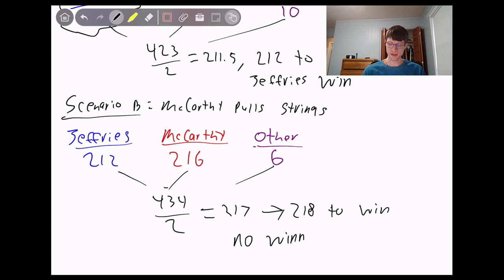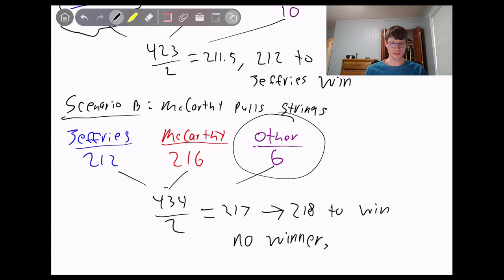So we would have no winner. So basically there's no good path for McCarthy. If this really is true, that there are six people who are not going to vote for him no matter what, there's no way that McCarthy can pull this off because the numbers just don't add up for him. They don't have enough Republicans supporting him to get him into the house.